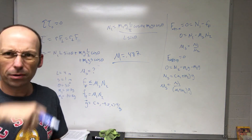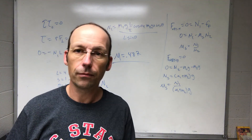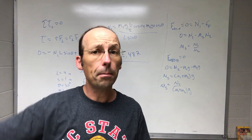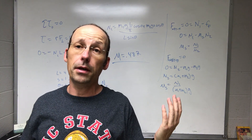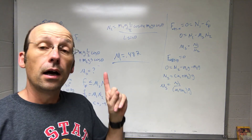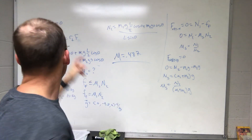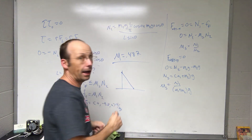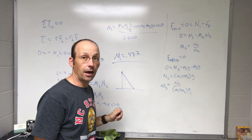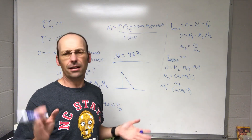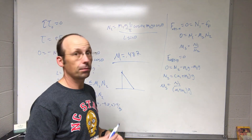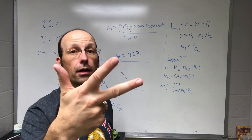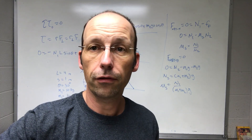That problem took longer than expected but we had a good time. The nice thing about the Python calculation is that you can easily change parameters — like the ladder length to 10 meters. Extensions to consider: what if there's friction at both the top and the bottom? Much more complicated. The key takeaway: you need those three equations — net force in x, net force in y, and net torque about any point equals zero.